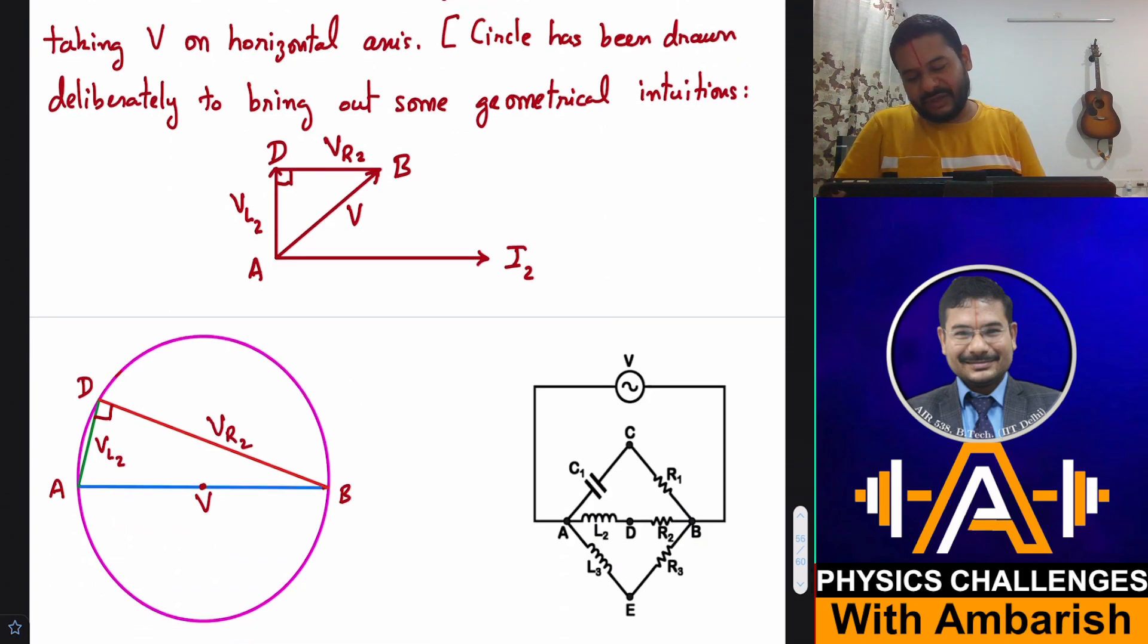Voltage of point D is accurately represented by the phasor AD relative to the voltage phasor across AB, that is the generator voltage. The semicircle is drawn just to bring out some geometrical interesting things. Now, similarly, you know that in capacitor the voltage lags behind the current.